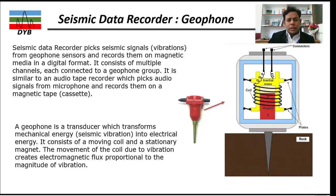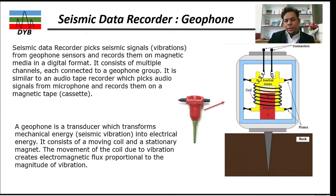A geophone is a transducer which transforms mechanical energy — seismic vibrations — into electrical energy. It consists of a moving coil, shown here on the right side, and the movement of that coil due to vibration creates an electromagnetic flux proportional to the magnitude of the vibration.